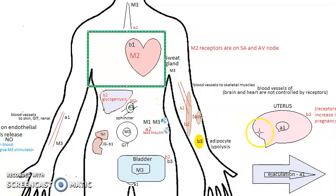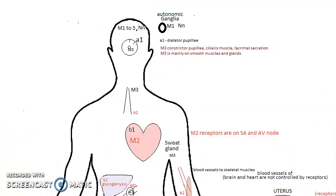For the heart — this is very important. Heart rate increases via beta-1 receptors, which are present on the SA node and AV node. M2 receptors decrease heart rate — that's for the relaxed resting state where heart rate is not increased.